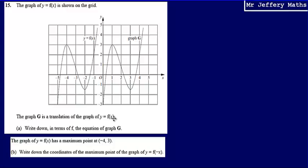Then we're told that the graph G is a translation of the graph of y equals f(x). So this is essentially the same graph that's been moved to the right. What we're asked to do for part A is to write down in terms of f the equation of graph G.